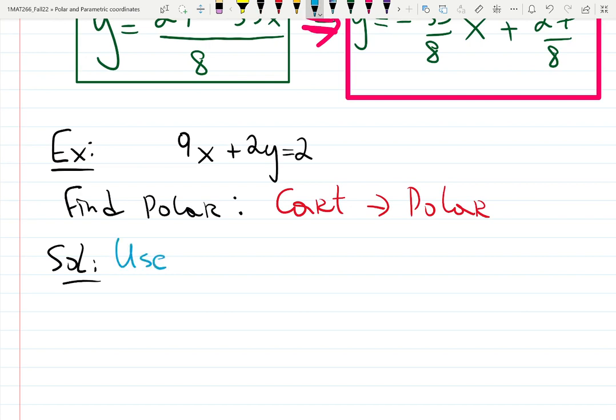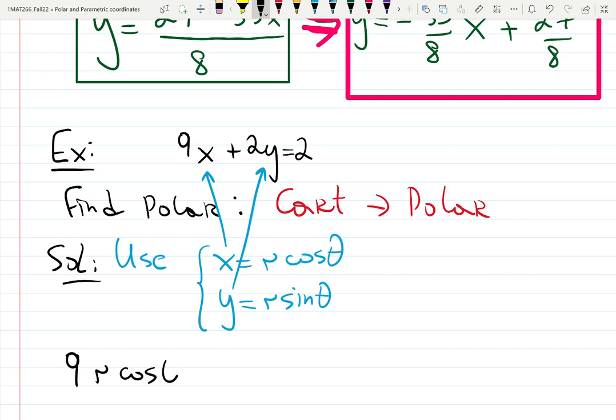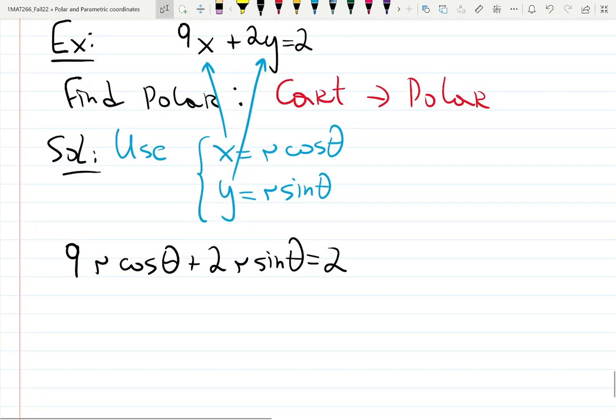Solution. Use the fact that X is R cosine theta and Y is R sine theta. Plug them in. And then you will have 9R cosine theta plus 2R sine theta equals 2. You can leave it as it is or you can solve for R and R will be equal blah, blah, blah.